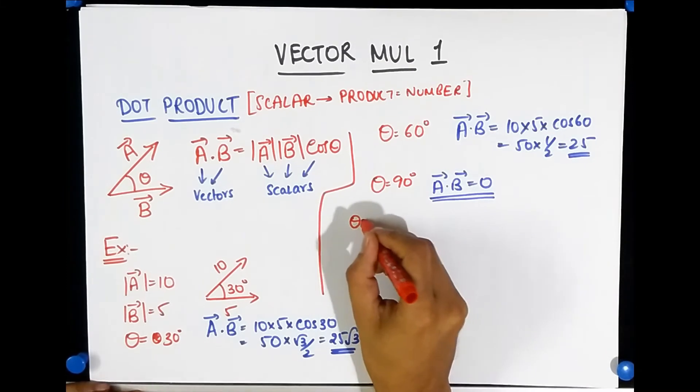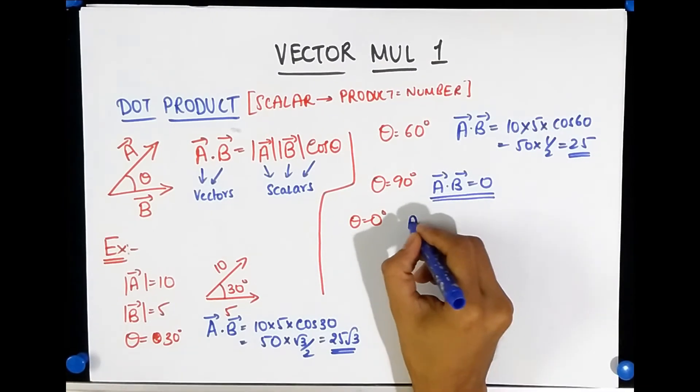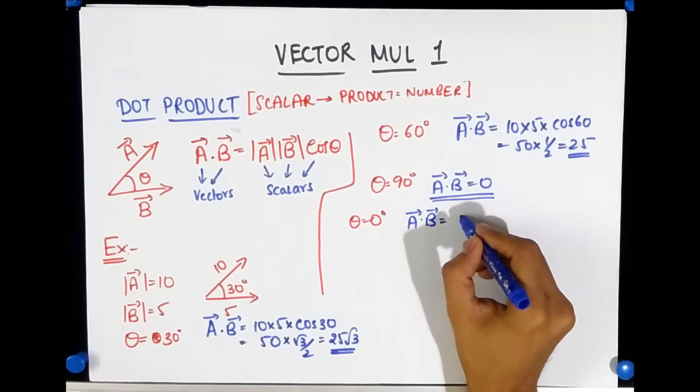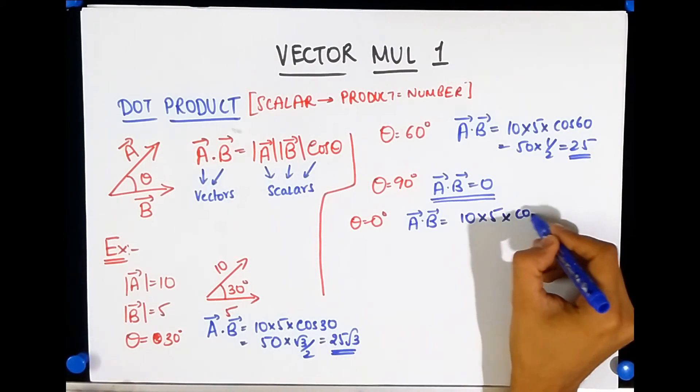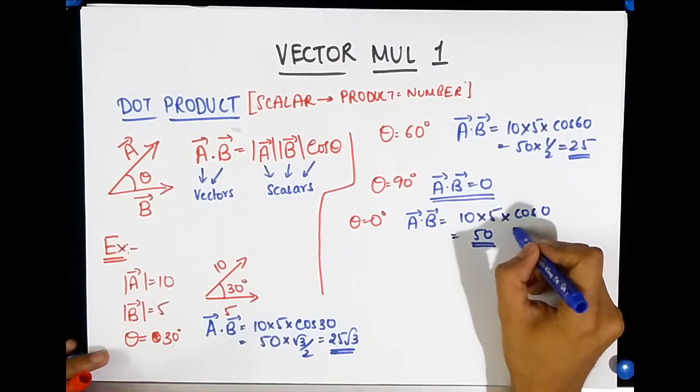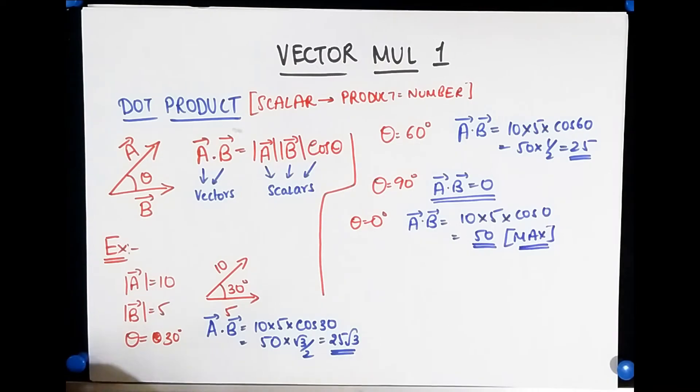And lastly, what would happen if theta was 0 degrees? Well, cos 0 is 1, so A dot B would become 10 multiplied by 5 multiplied by cos 0, which is 50. Notice that this is the maximum value you can ever have for a dot product.